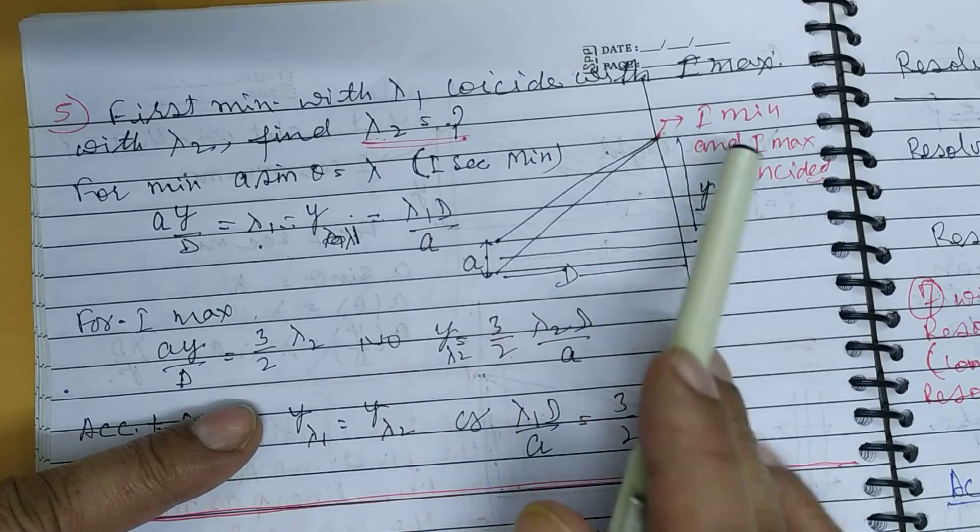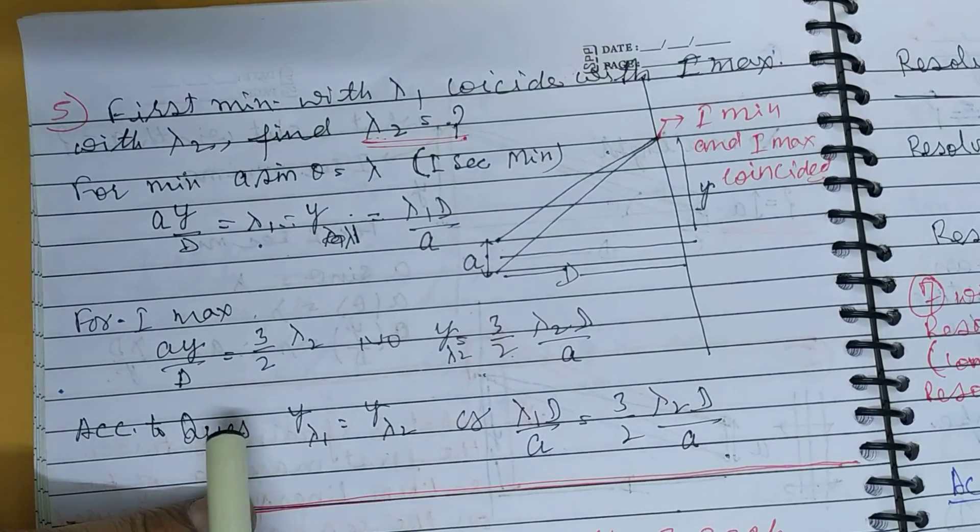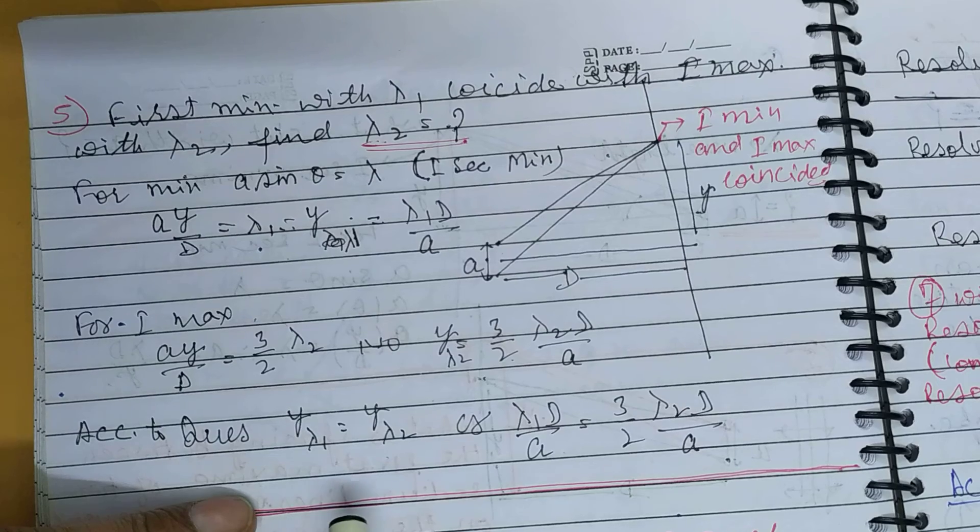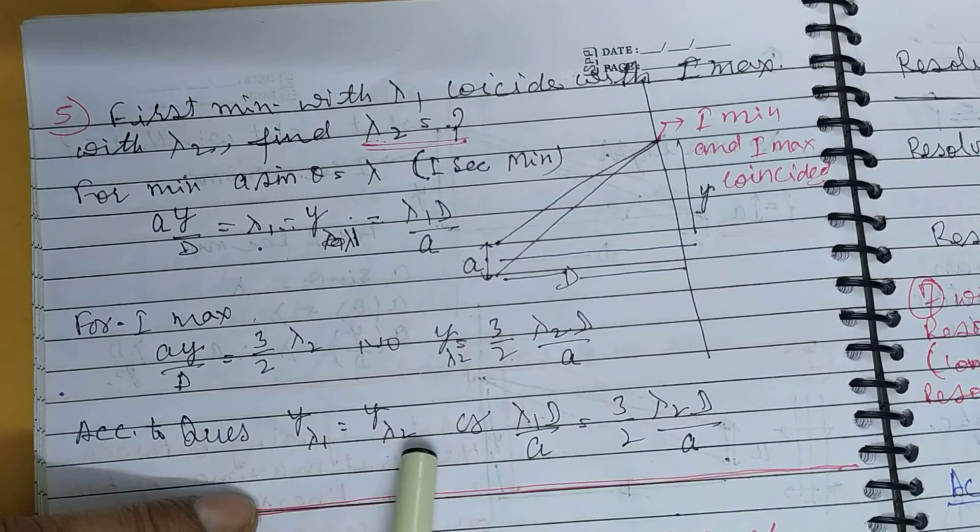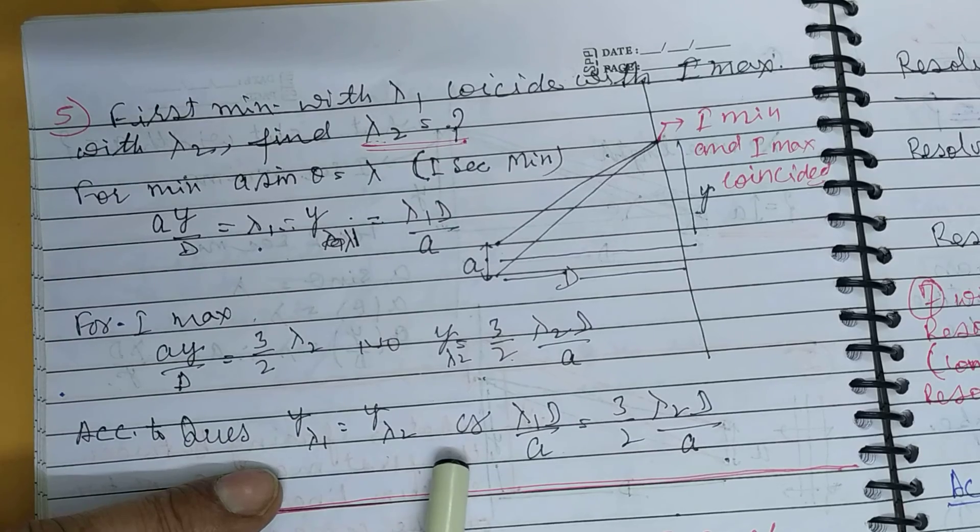Both coincide and are the same, so you can equate both. When you equate y lambda 1 equal to y lambda 2, then from this equation: